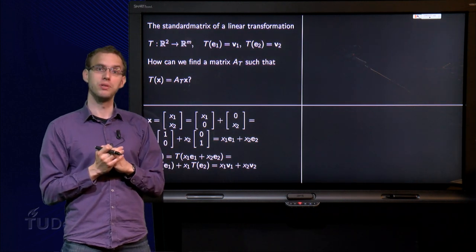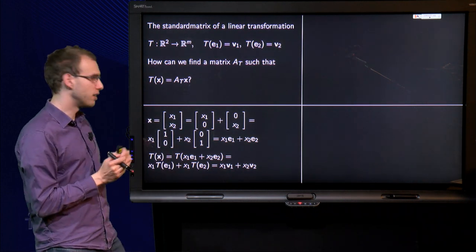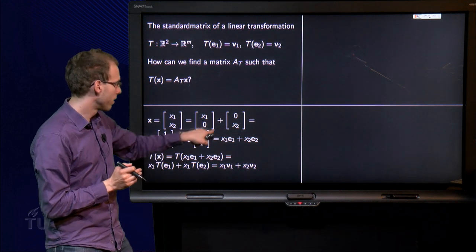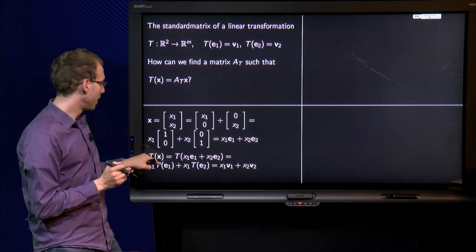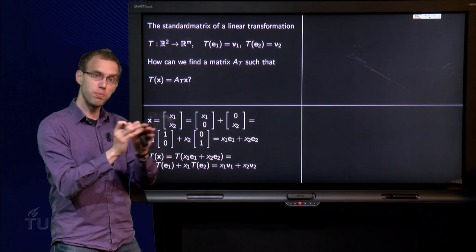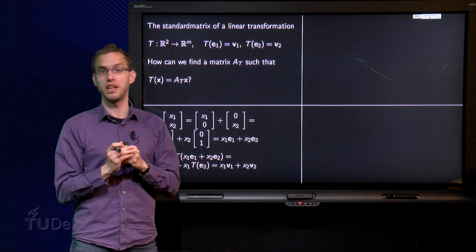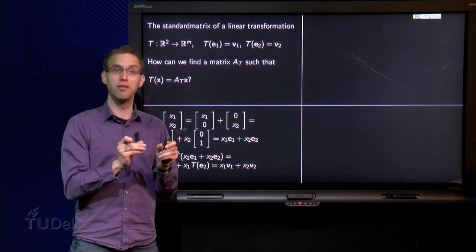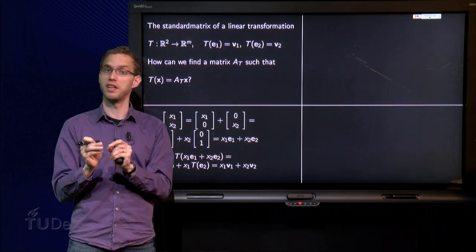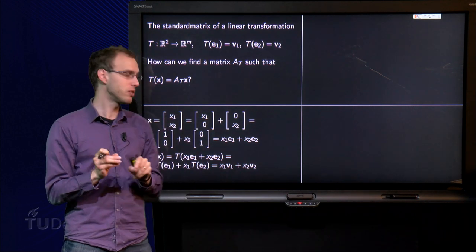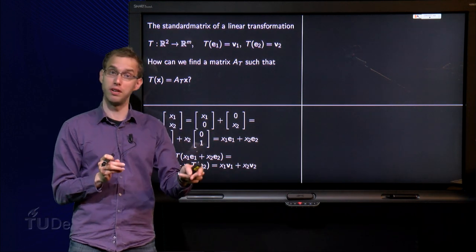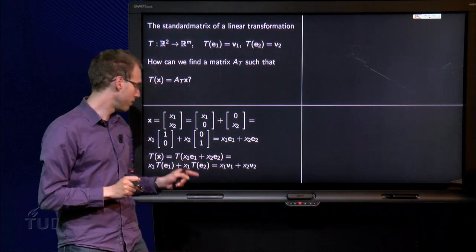And now we can compute the image of X, T of X equals T of X1 E1 plus X2 E2. Then you use the linearity, so you split up T of X1 E1 plus X2 E2 equals T of X1 E1 plus T of X2 E2. And then you can take the scalars in front, so X1 times T of E1 plus X2 times T of E2.